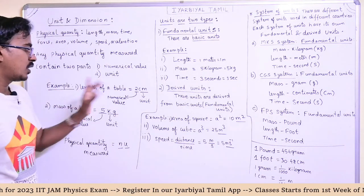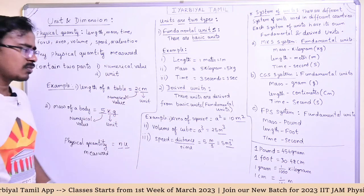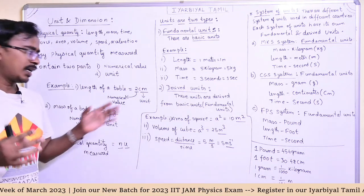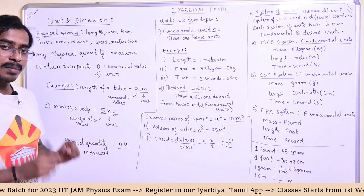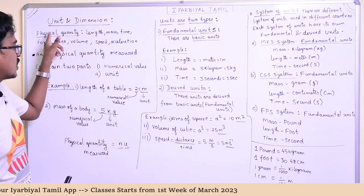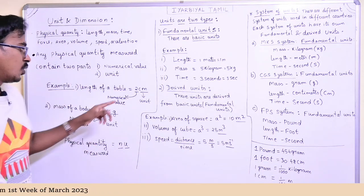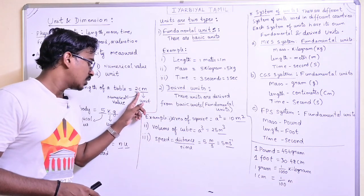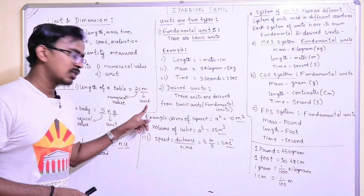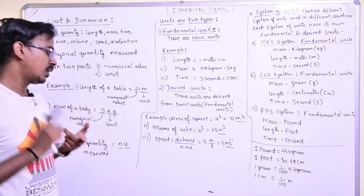For example, length of a table. If you measure the length of a table, it's about two centimeters. We have some value of two centimeters. The length is the physical quantity. Two is the numerical value, and CM is the unit. So, there are two parts in the physical quantity: numerical value and unit.